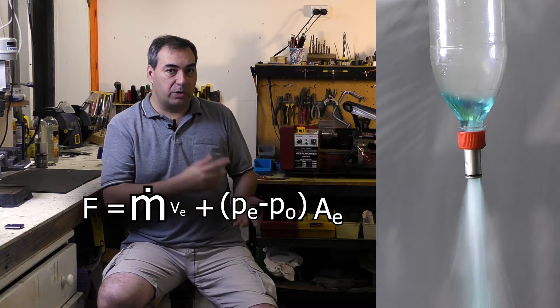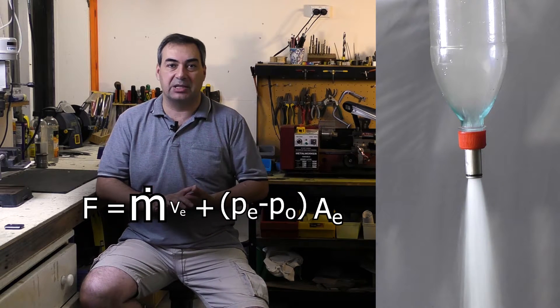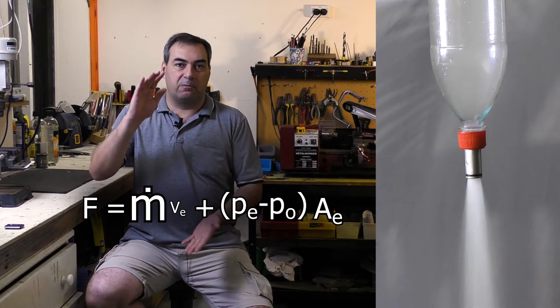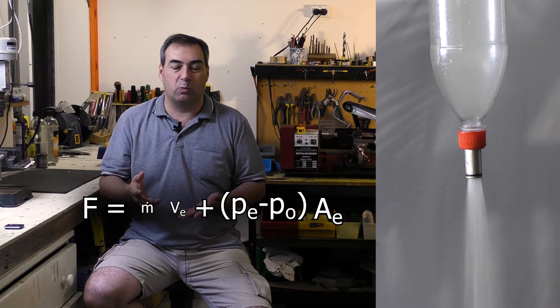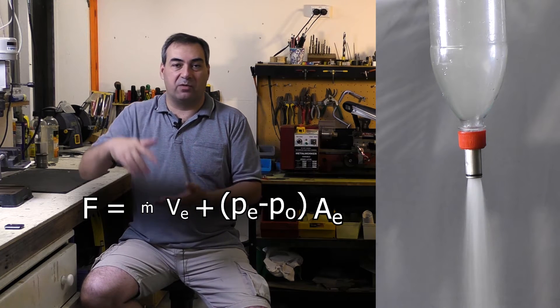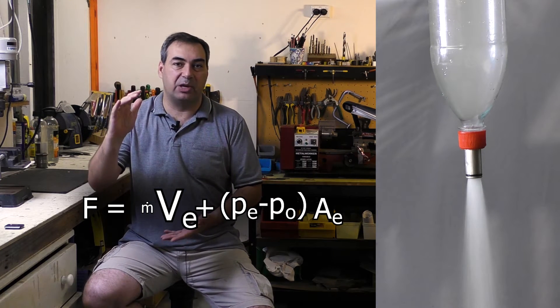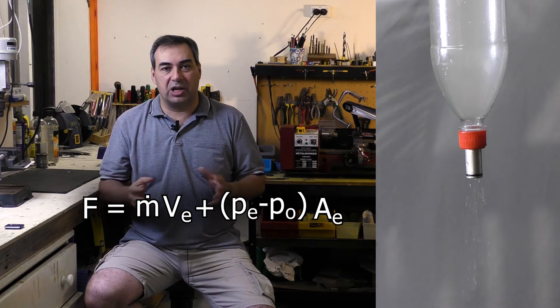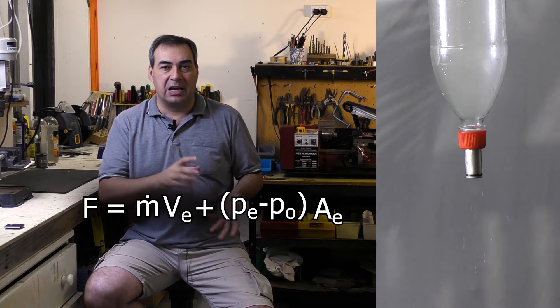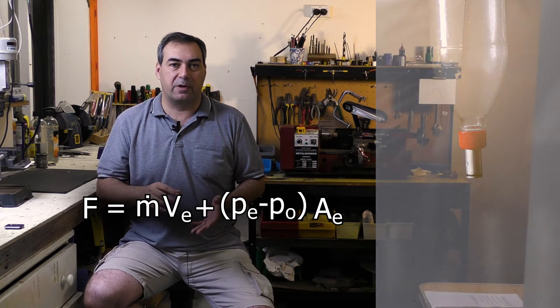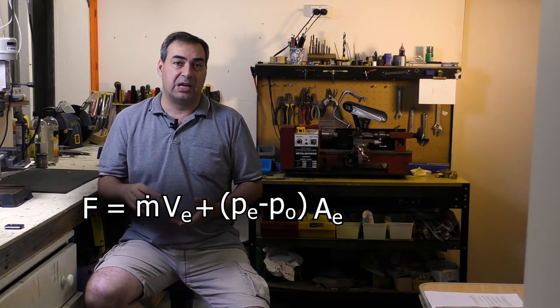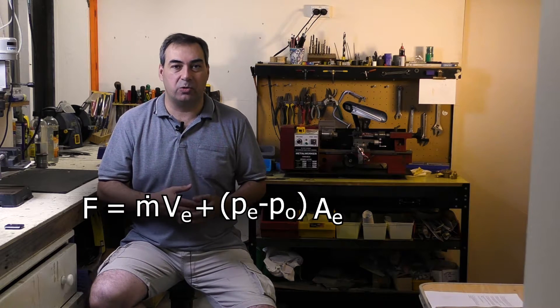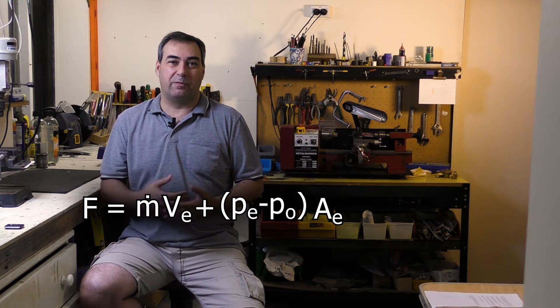Now when the water runs out and the compressed air starts coming out, the mass flow rate really drops because air is so much lighter than water, but the exit velocity gets very high because the air comes out at the speed of sound. So as it turns out during the air phase only, you get about two-thirds the amount of thrust as you get with the water phase and is in fact why water rockets use water for improved performance.